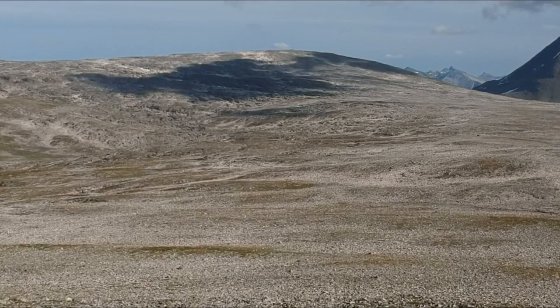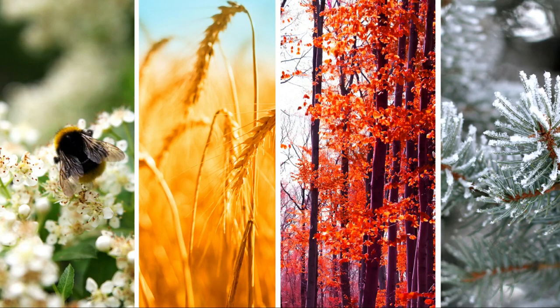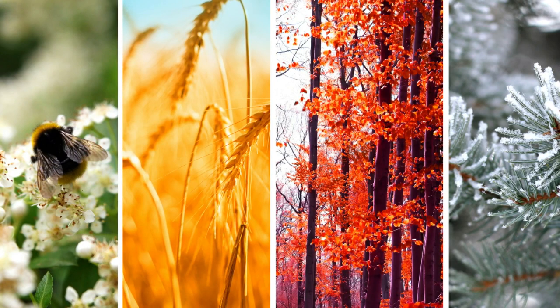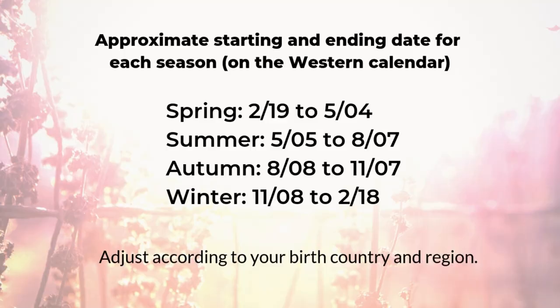In different regions and countries you might have different ways to identify the seasons. But according to the Chinese lunar calendar, each season is about three months. Spring starts around February 19th to May 4th on the western calendar. Summer starts around May 5th to August 7th. Autumn starts from August 8th to November 7th. Winter starts from November 8th to February 18th of the next year.